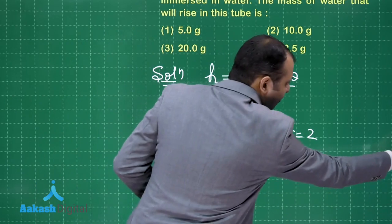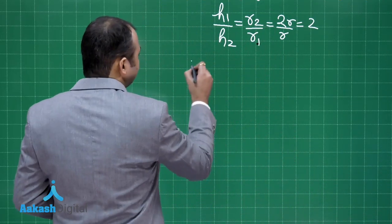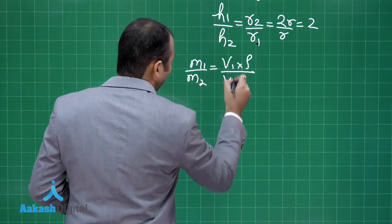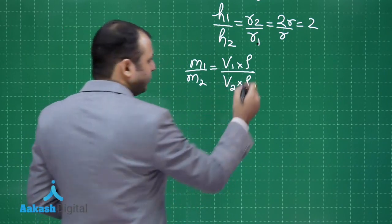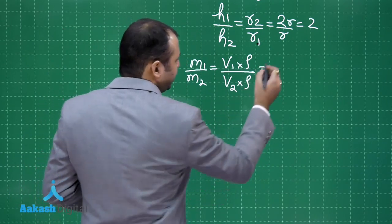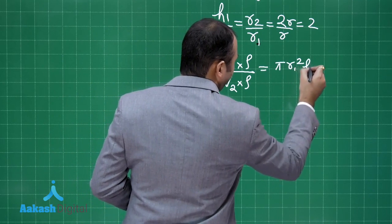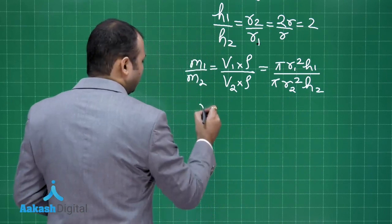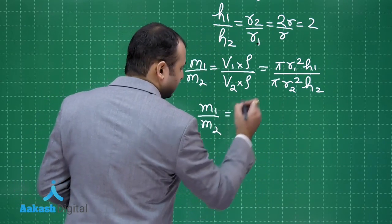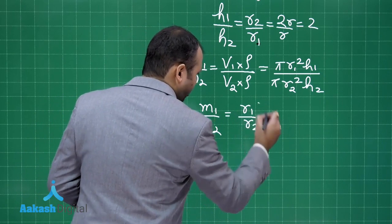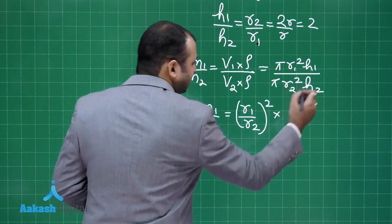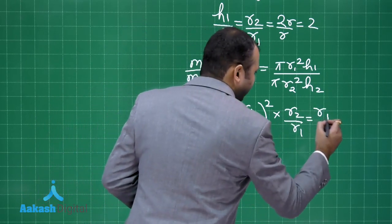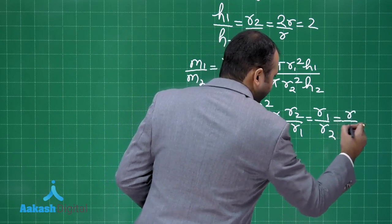Now when we talk about mass, m1 upon m2 will be equal to volume 1 into density divided by volume 2 into density. Since the densities are same, it will come down to volume ratio. So it is pi r1 square h1 divided by pi r2 square h2. So m1 upon m2, things will be cancelled, we will get r1 by r2 whole square, and in terms of h1 by h2, I can write r2 by r1.